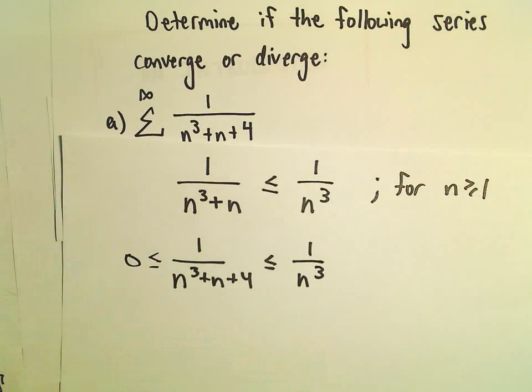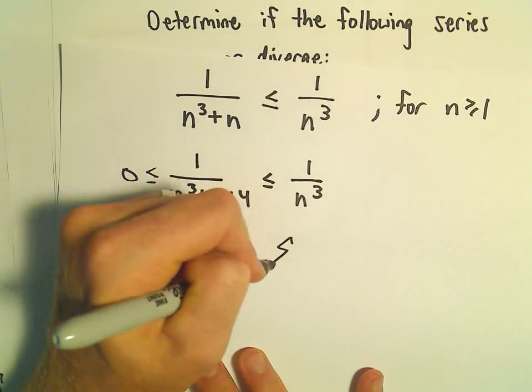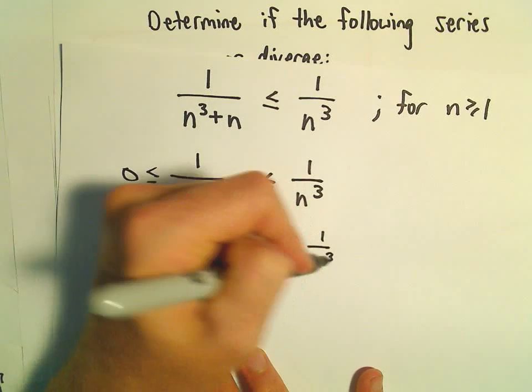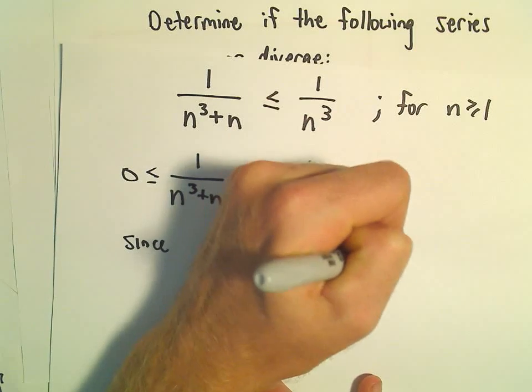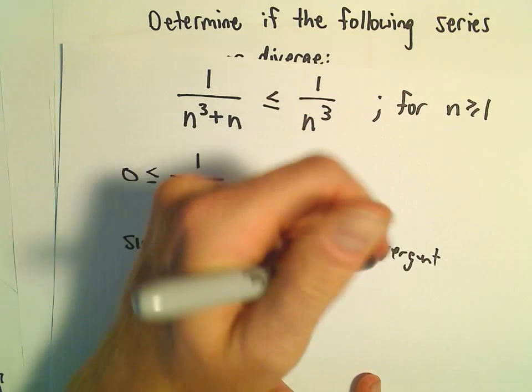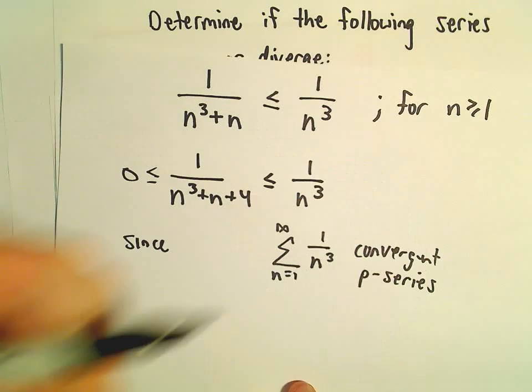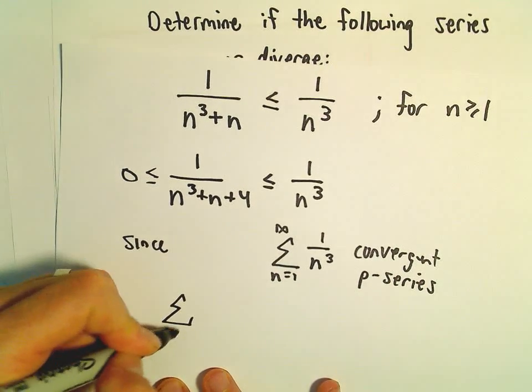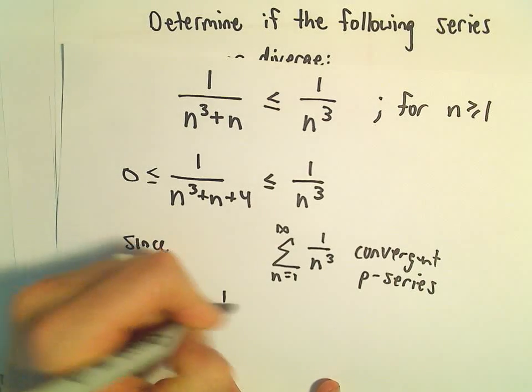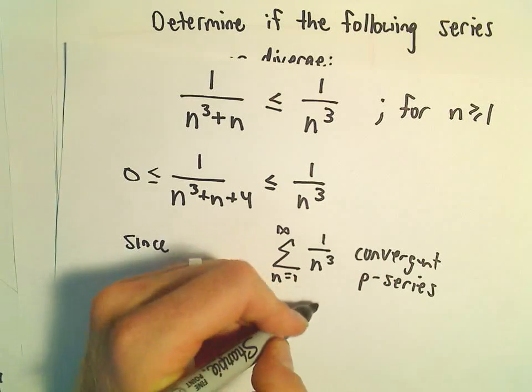Notice these are certainly greater than or equal to 0. We know the series 1 over n cubed from n equals 1 to infinity is a convergent p-series. Since that's convergent and the series associated with 1 over n cubed plus n plus 4 is smaller than that one...